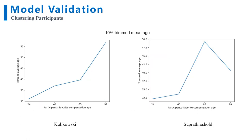In the previous analysis, we grouped observers by their biological age. We could also cluster the observers according to their votes for each compensation condition. We calculate each observer's favorite compensation age and cluster them into four different groups because there are four different conditions. Then we calculate the average age of each cluster. Here we use the 10% trimmed average to get rid of some extreme cases. Since we didn't collect enough participants to represent the 99-year-old age range, we should discard the last data point and only consider the first three. For the first three data points, we can see that the trimmed average age in the supra-threshold model is more consistent with the observer's favorite compensation age, compared to the Kulikovsky model.